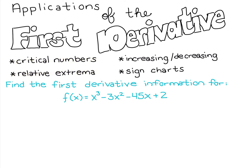We have the function f(x) = x³ - 3x² - 45x + 2, and we want to find all first derivative information. So we're going to first find that first derivative and set it equal to 0.